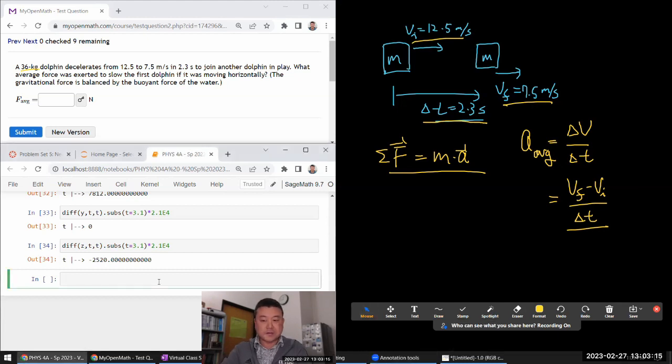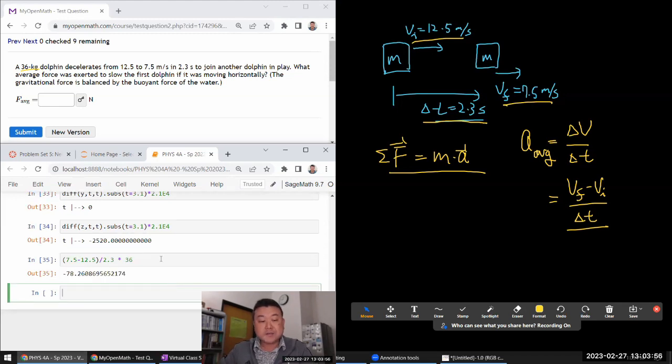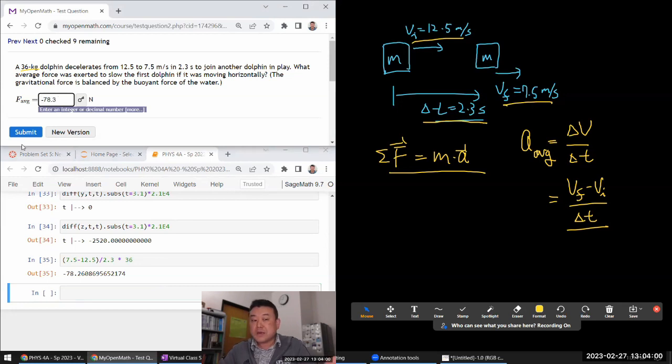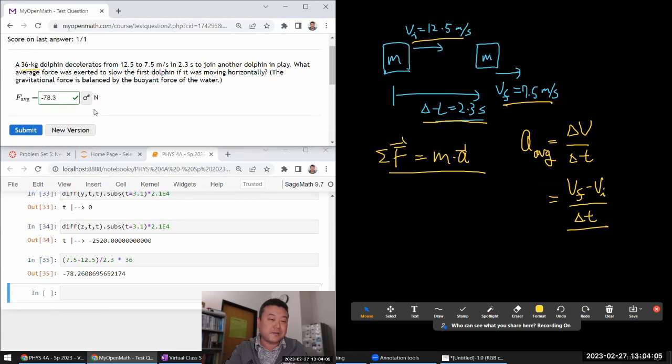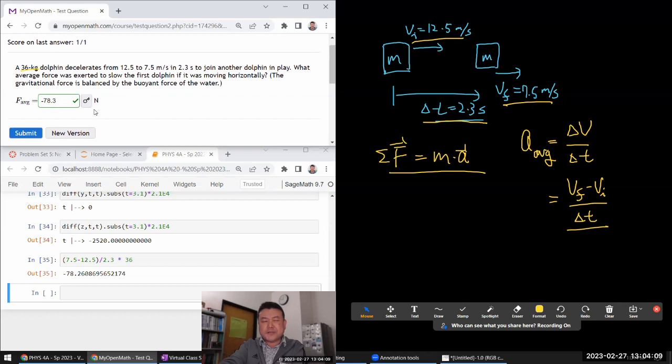So, let me plug in the numbers and do it. So, v final is 7.5. In this question, it's ambiguous to me if they're looking for a signed quantity, as in minus signs are meaningful, or an unsigned quantity, as in they're looking for magnitude. Since they don't say the word magnitude, let me put it with the signs. So, my final velocity minus 12.5 initial velocity. So, I'll get a negative answer there. Let me let that be. Divide by the time, 2.3 seconds. And then the whole thing multiplied by the mass, 36 kilograms. So, I get minus 78.3, let's try it with a sign. And if it says that's wrong, then I will try the positive version of it. The minus sign here is meaningful in that it indicates that the dolphin is being accelerated in the opposite direction from the direction it's moving.